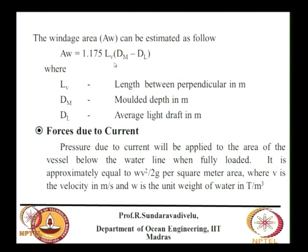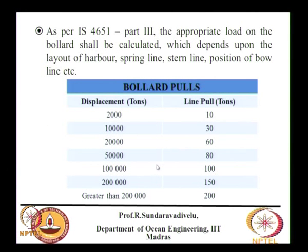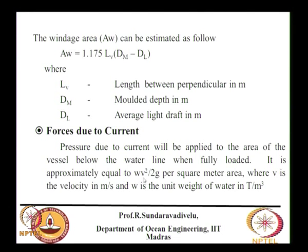The velocity of current in tidal flow is between 1 and 5 knots; generally between 1 and 3 knots. More than 3 knots is very difficult to design for. The windage area uses depth moulded and light draft. This gives you the current force Fc and wind force Fw.